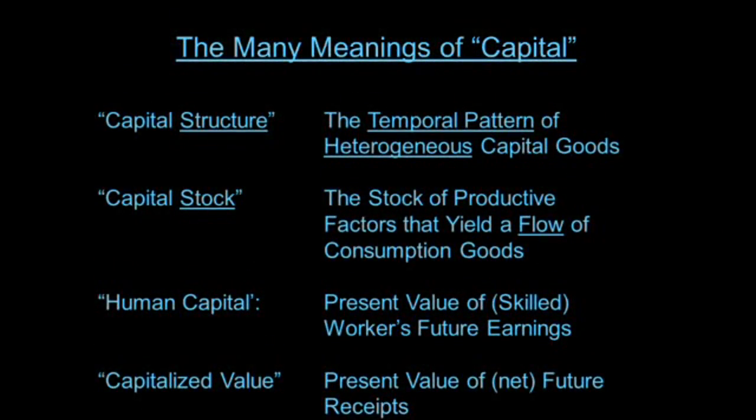The contrast is with capital structure — that's the Austrian view. By structure we mean a temporal pattern of heterogeneous capital goods. The focus is on how these things fit together to produce consumer goods, and what the time profile of the structure of production is. The Austrians talk about capital measurement, although very little of the theory actually depends on a hardcore measurement of particular pieces of capital goods, partly because capital is so heterogeneous.